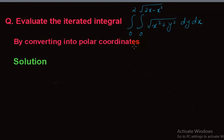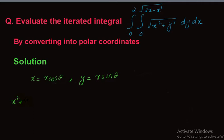Our first challenge is to find the limits of this region in polar coordinates. In polar coordinates, x equals r cos θ, y equals r sin θ, x squared plus y squared equals r squared, and the square root of x squared plus y squared equals r.